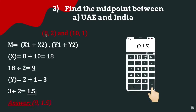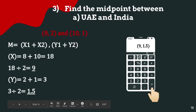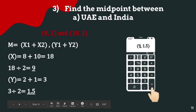Find the midpoint between UAE (8, 2) and India (10, 1). The midpoint formula is M = ((x1 + x2)/2, (y1 + y2)/2). For the x-coordinate: (8 + 10)/2 = 18/2 = 9. For the y-coordinate: (2 + 1)/2 = 3/2 = 1.5. So the overall answer is (9, 1.5).